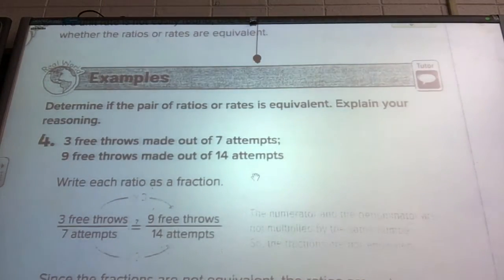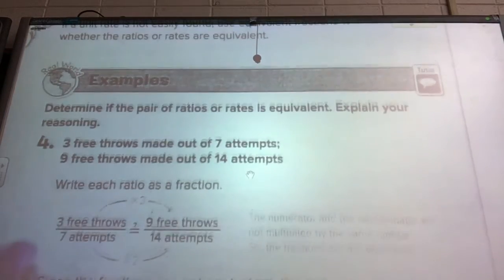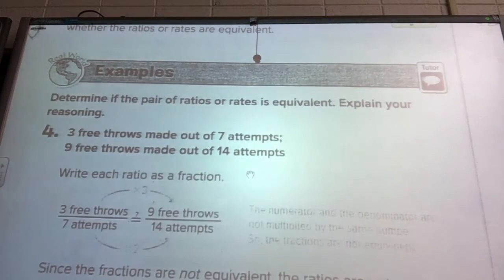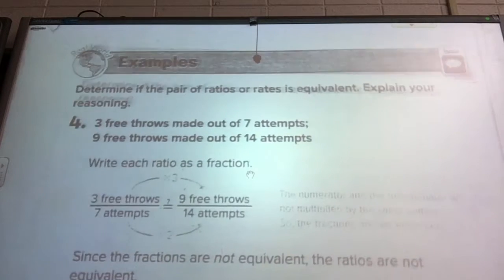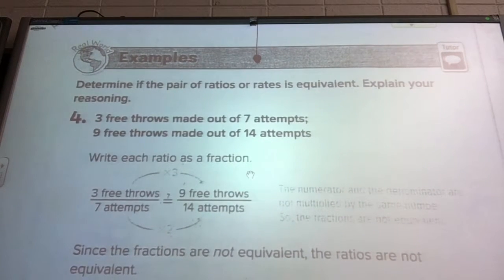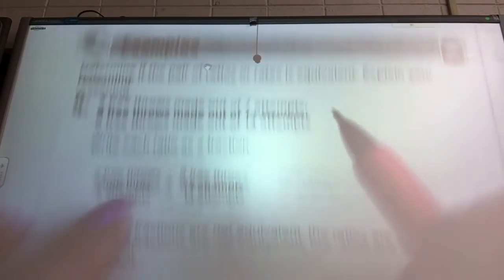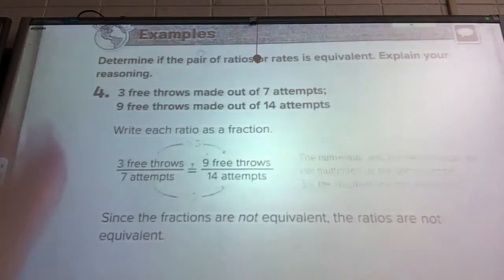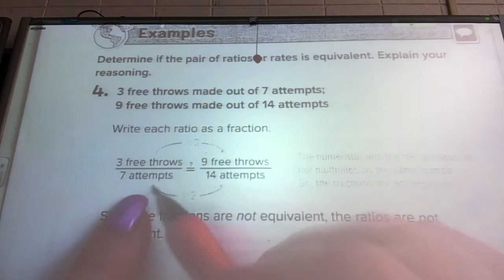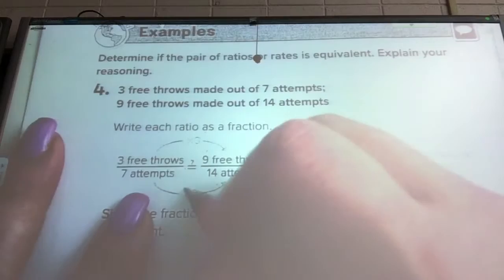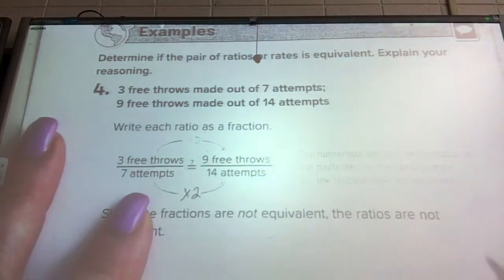We are on the bottom of page 61, Equivalent Fractions. We are determining if two rates are equivalent using reasoning. It talks about two different free throws: 3 free throws made out of 7 attempts and 9 out of 14 attempts. Down below it does this work for you. To figure out if they're equivalent, what would we have to do to get from 7 to 14? They times 2 to get there.